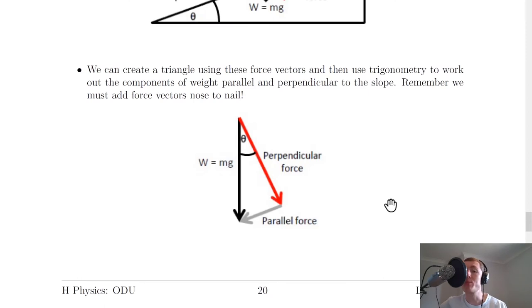In order to arrive at expressions for the parallel and perpendicular components of our weight, we can create a triangle using these force vectors and then use trigonometry to work out the components of weight parallel and perpendicular to the slope. Remember we must add force vectors nose to tail.